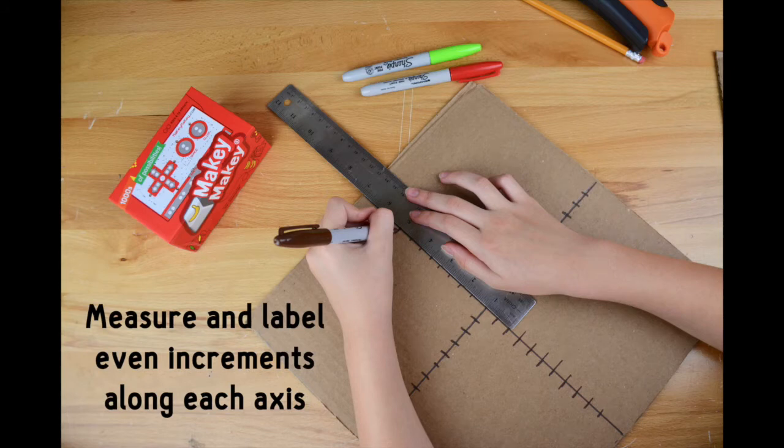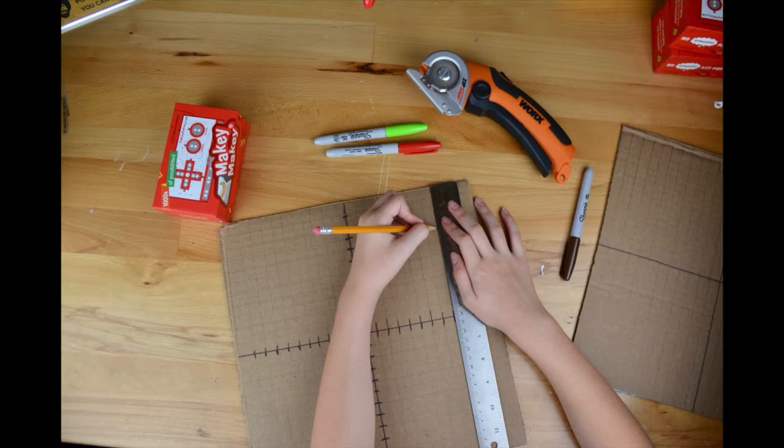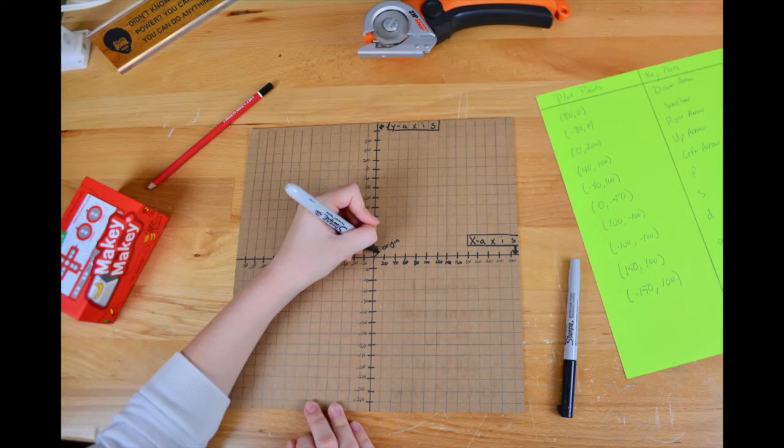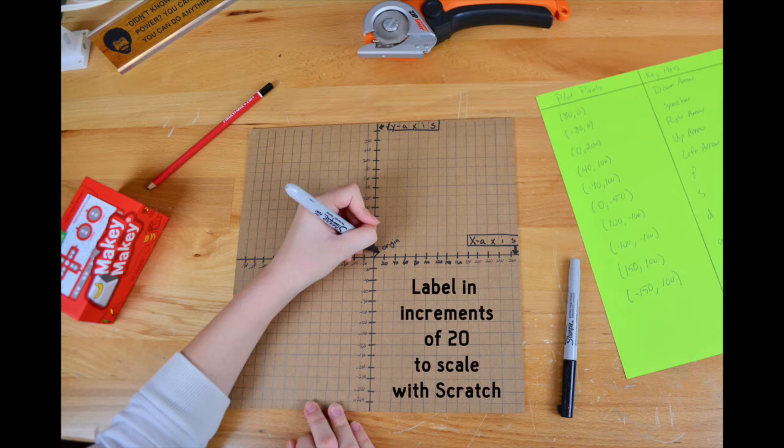You have to measure and label even increments. You could do half an inch or a centimeter, but make sure you have at least 12 notches. Use a pencil and a ruler to make your grid so that you'll be able to plot your points easily. You want to label in increments of 20 because this will scale to our coding that we do in Scratch.